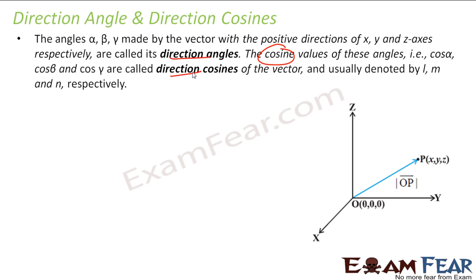For example, this is my vector. With respect to x, this guy is making let's suppose alpha. With respect to y, this guy is beta. And with respect to z, this is gamma. Because I have some vector, it will make some angles with x, y and z axis. So alpha, beta and gamma are called direction angles, which are not much used.